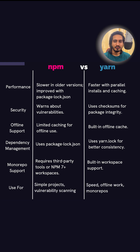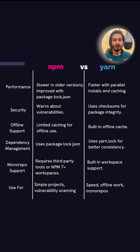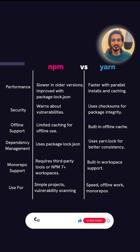Use NPM for simple projects and to scan vulnerabilities in your code. But for speedy offline work and monolithic repositories, go for YARN. NPM has a bigger community because of Node.js, while YARN is growing.